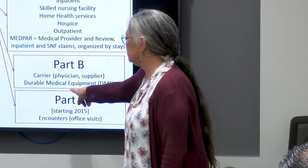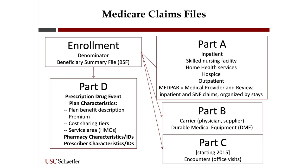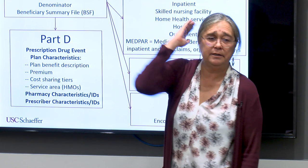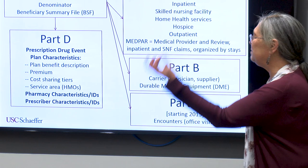For Part C, we're starting to get encounter data in 2015. Part D has the basic Prescription Drug Event file (PDE), which has all of the fills — every drug claim. Then there are plan characteristics files with the plan benefit description, the premium, cost sharing tiers, and service areas — separate files for each. For certain HMOs, there's only certain service areas that they cover.